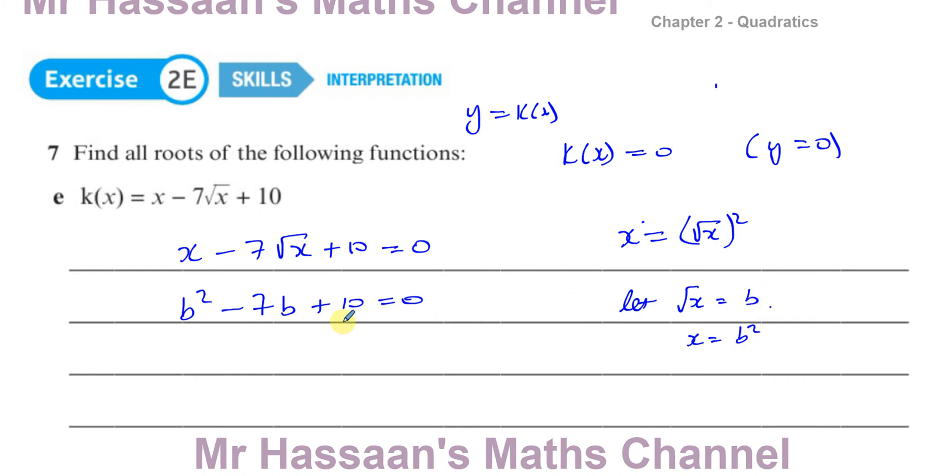So I can replace the root x with b, and I can replace the x with b squared. Now I can try to factorize this. When I factorize this, I see I have two values that multiply to give you 10 and add to give you negative 7. That's b minus 2 and b minus 5. So here we can say b is equal to 2 and b is equal to 5.